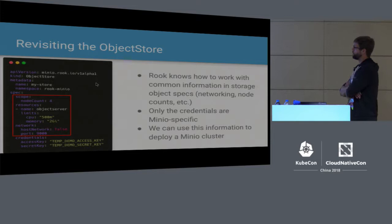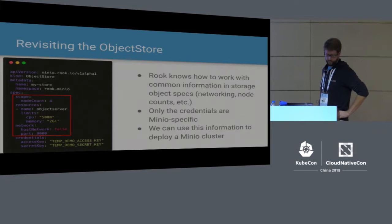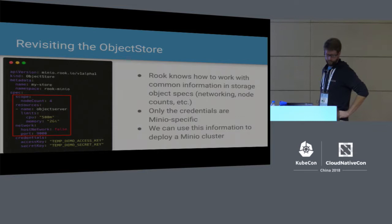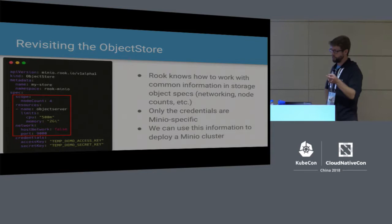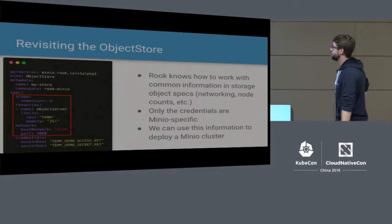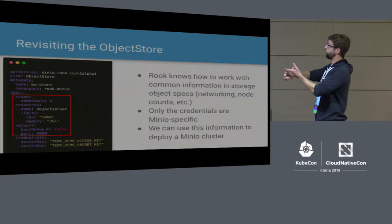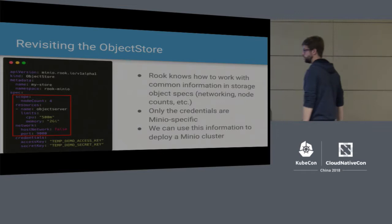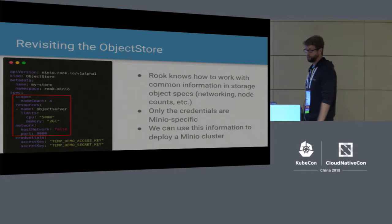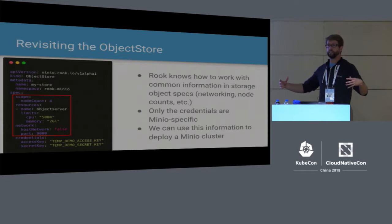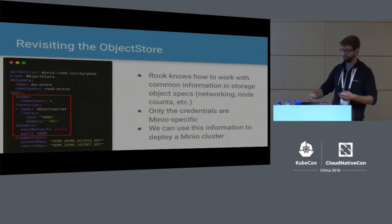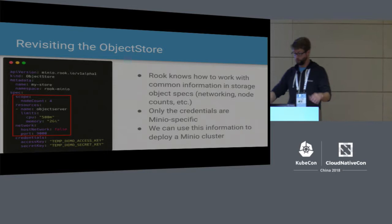This gets into some of the configuration options available as part of the Rook framework. This is a more fleshed-out spec of what can go into a Minio object store. Everything in the red box is common stuff usable in any storage solution — Ceph uses it, Minio uses it, CockroachDB uses it, NFS uses it, Cassandra — these common parameters for the storage scope, boundaries in the cluster, how many resources to use, and what networking configuration to use. The only thing specific to Minio here are the credentials at the bottom. This demonstrates how Rook makes it easier for new storage solutions to integrate and start running inside Kubernetes because some of the common work is already done.